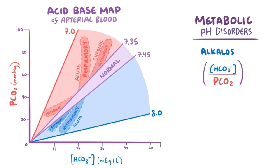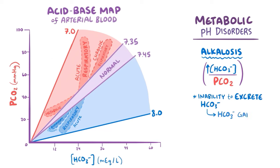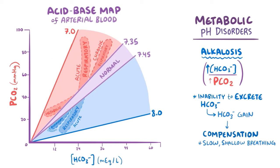Metabolic alkalosis can result from an inability to excrete excess bicarbonate in the urine, leading to increased bicarbonate concentration and a rise in pH. There's an immediate respiratory compensation with slow, shallow breathing, which allows pCO2 to rise above 45 mmHg and prevents the pH from getting really high. On the map, metabolic alkalosis is characterized by pH higher than 7.45, bicarbonate above 26 mEq/L, and pCO2 above 45 mmHg. In metabolic abnormalities, there are no acute and chronic phases, since respiratory compensation starts right away.